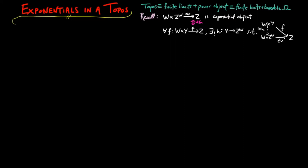We will use our knowledge of the usual construction of exponentials in the category of sets — where the set of maps between two sets is a subset of the power set of a Cartesian product — as a guide to how to construct exponents in any topos.